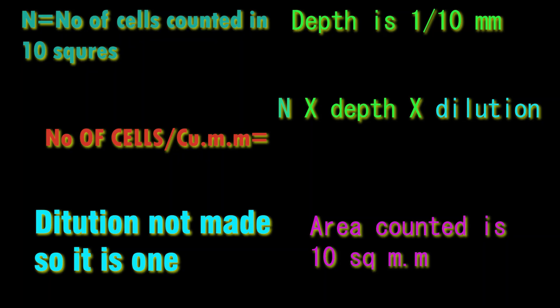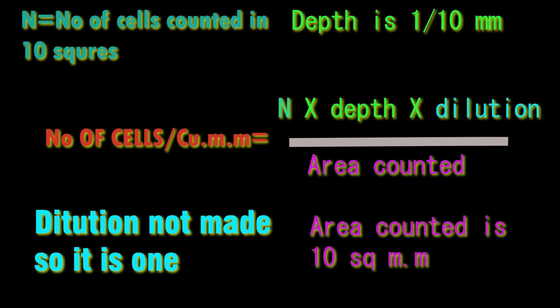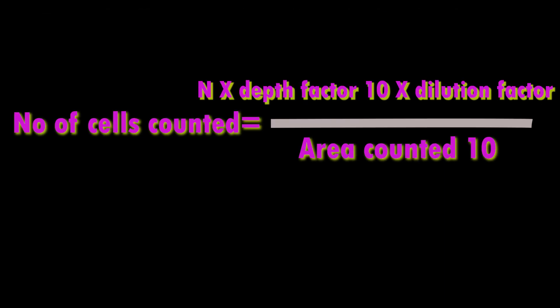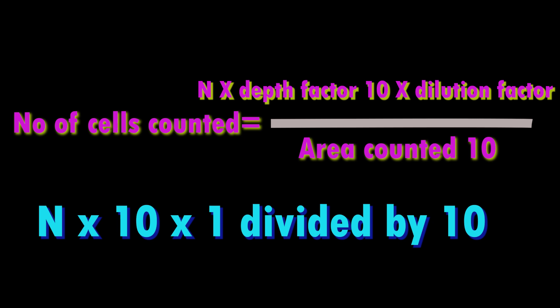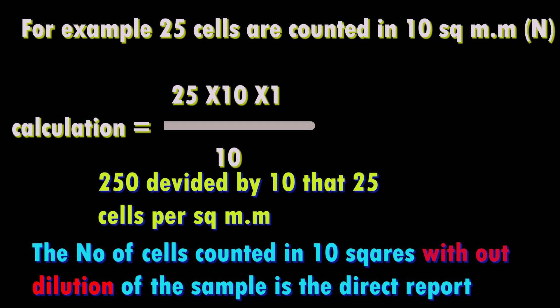Calculations: the number of cells is counted by multiplying with the depth factor and dilution factor, divided by the area counted. For an undiluted sample counted over 10 squares: calculation = cells counted × dilution (1, since undiluted) × depth factor (10) ÷ area (10 mm²). This simplifies so that the cell count equals the number of cells counted in 10 squares per mm³.